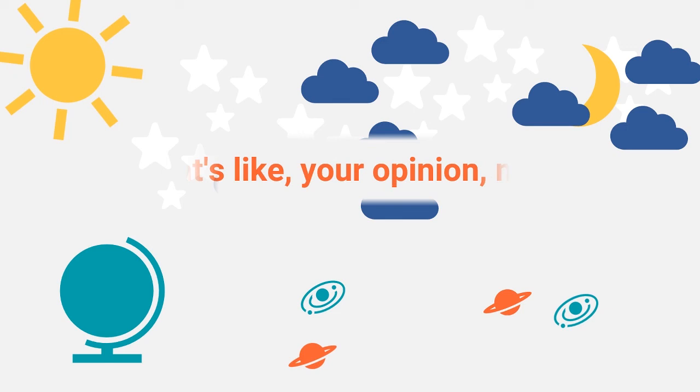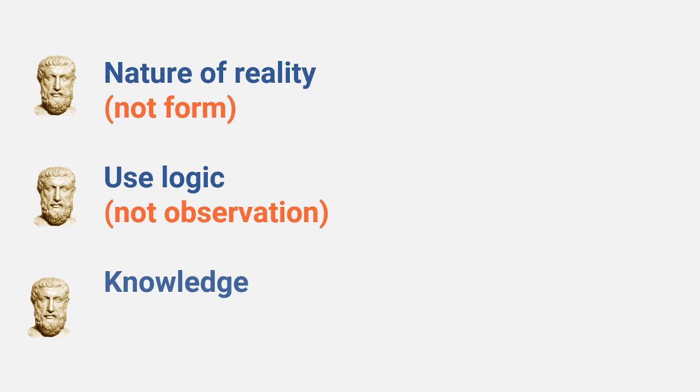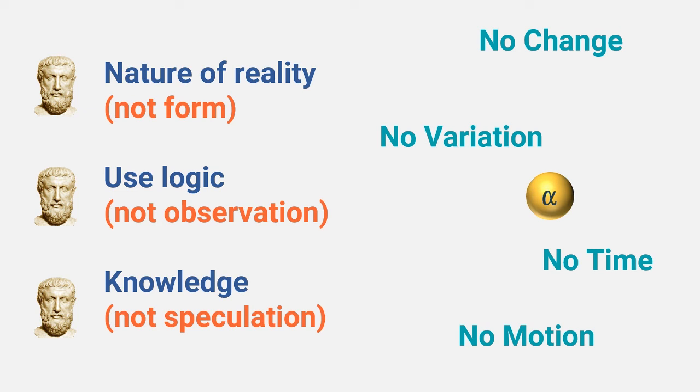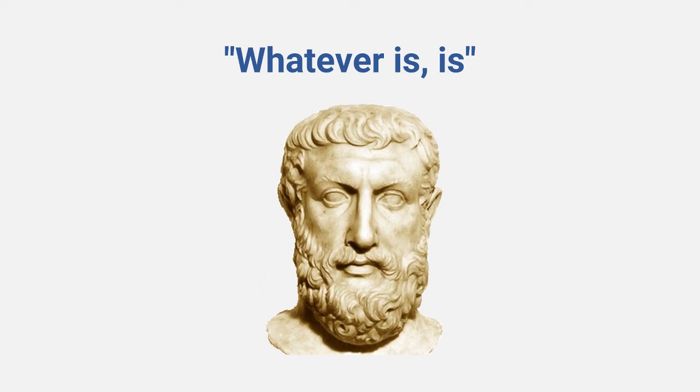So to summarize, Parmenides is studying the nature of reality, and he is using a rigid logic to drive his point home. No speculations, no mere opinions, but only what can be known for sure counts. This leads to the conclusion that whatever is truly is, and what is not cannot exist, and cannot be spoken about, and cannot be thought. What follows necessarily from this approach is that much of what we believe or assume about reality is not true. Change is not true, motion is impossible, variation cannot exist, and time doesn't work. This one extreme position in philosophy can be summed up in the famous phrase, whatever is, is.